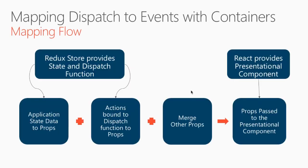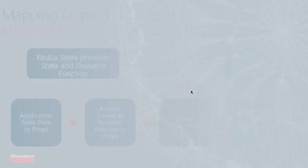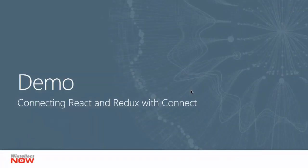Let's take a look at this mapping flow. We're basically going to have our application state data and our actions bound to the dispatch function combined together to populate our props object. The actions and the application state both come from the Redux store. Then we're going to merge that with any other props that we simply want to pass into our container. Finally these are passed into our top level presentational component provided to us by React. So let's take a quick look at a demonstration of how to connect a React component to a Redux store using the connect API.